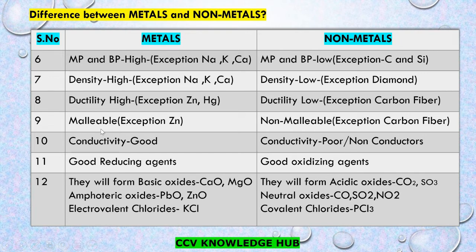What is malleability? Malleability is a property of a metal or non-metal in which it can be beaten into sheets. Metals are highly malleable. Here is an exception: zinc has low malleability. Non-metals are non-malleable. Here is an exception: carbon fiber is malleable and can be beaten into sheets.